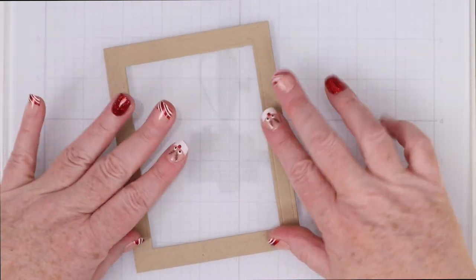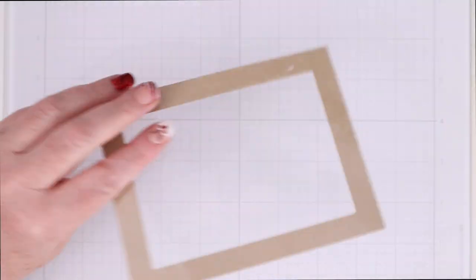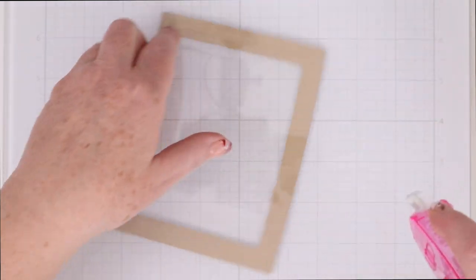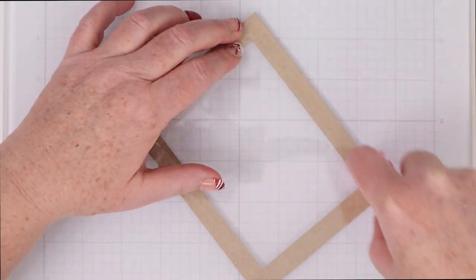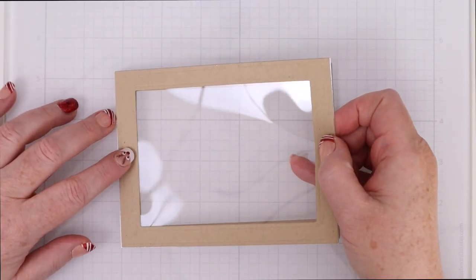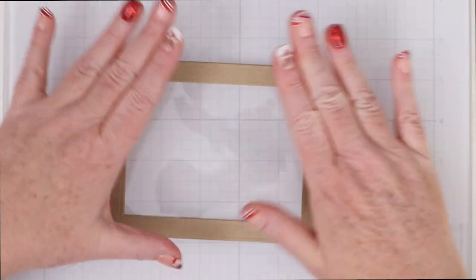Now the reason that I fussy cut out the rainbow and I'm not just adhering that to the wooden frame is because I like those big clouds on the side and I didn't want them covered up by the frame so this would be a really fun thing to do if you have a smaller image that you could actually use the colored in window plastic as your shaker window.